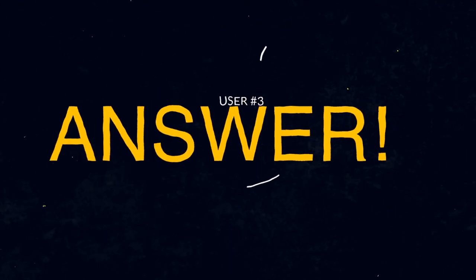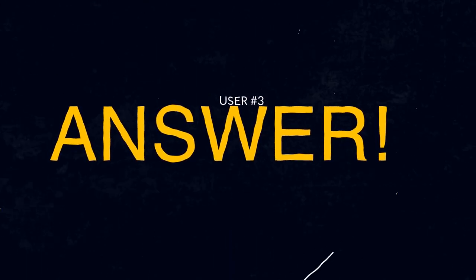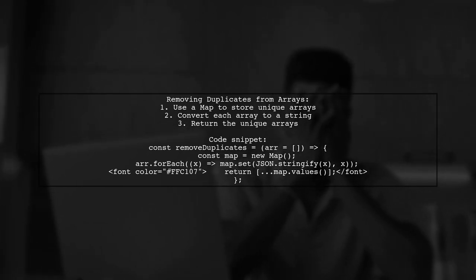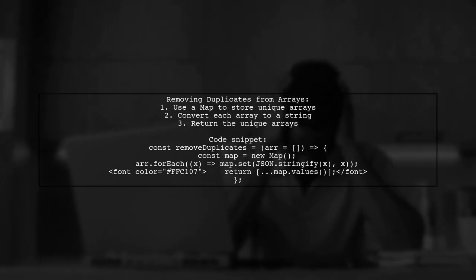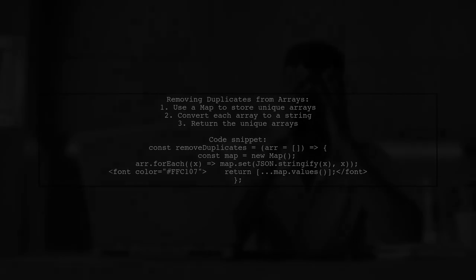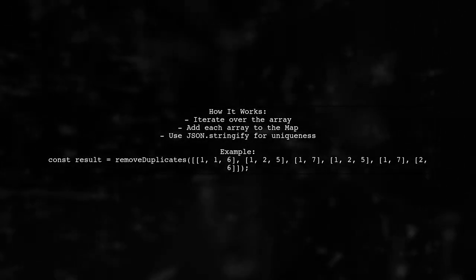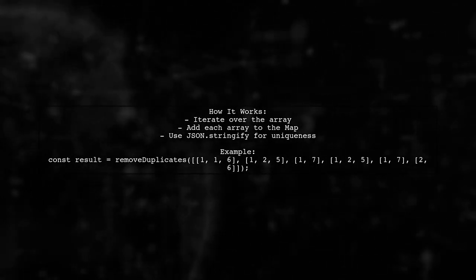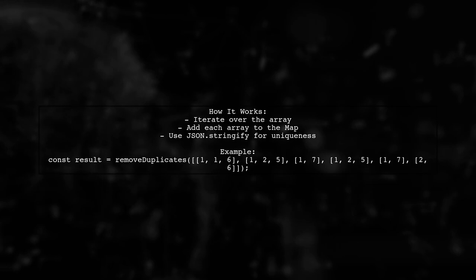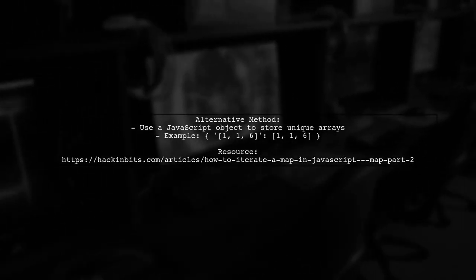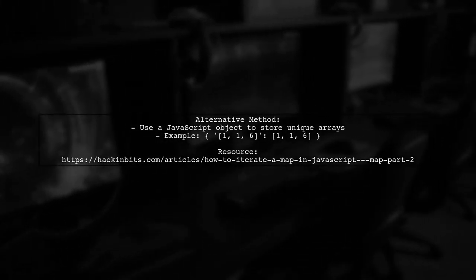Let's now look at another user-suggested answer. To remove duplicate arrays from an array of arrays in JavaScript, you can use a Map. This method allows you to store unique arrays by converting them to strings. You iterate over the original array, adding each array to the map. The keys are the stringified versions of the arrays, ensuring uniqueness. Alternatively, you can use a simple JavaScript object to achieve the same result by storing unique elements as properties.